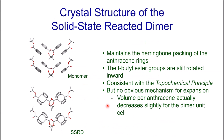Comparing the unit cells and packing for the solid state reacted dimer versus the monomer, the dimer maintains the herringbone packing of the anthracene rings and the tert-butyl ester groups remain rotated inward — consistent with topochemical principles. The two anthracene rings are pulled together but there isn't room or time for much else to happen. Unfortunately this doesn't provide an obvious mechanism for expansion, because the volume per anthracene ring for the dimer is actually slightly smaller than for the monomer. To determine the expansion mechanism, we need to orient the unit cells relative to the nanorod axis.